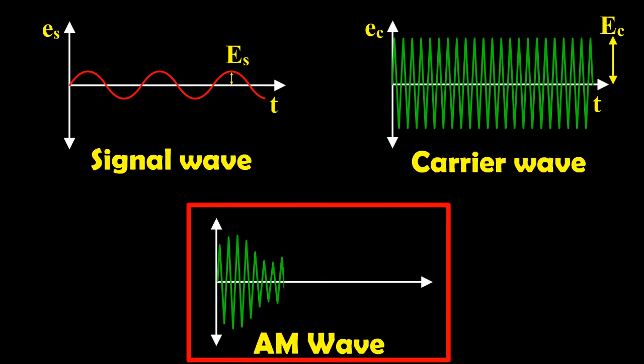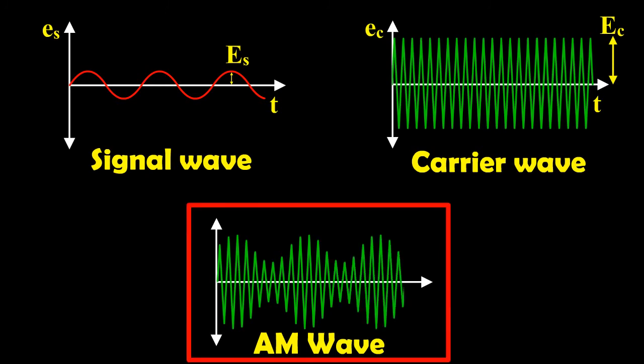In amplitude modulation, only the amplitude of the carrier wave is changed. The frequency and the phase of the carrier wave remain constant.